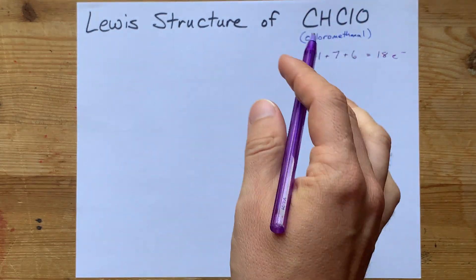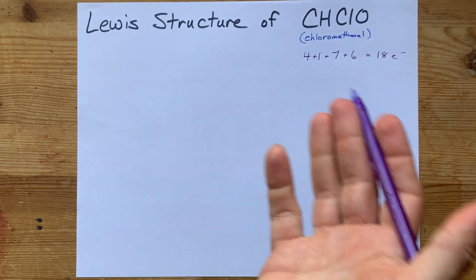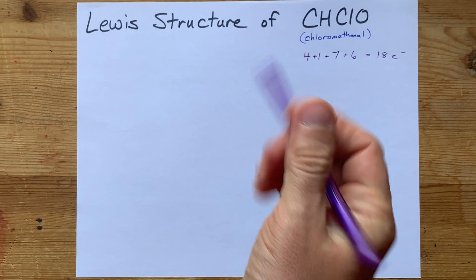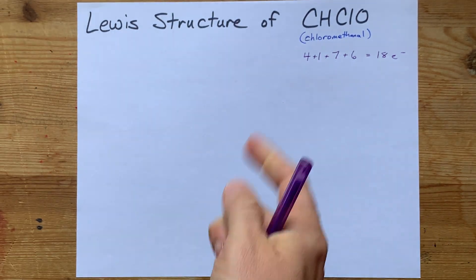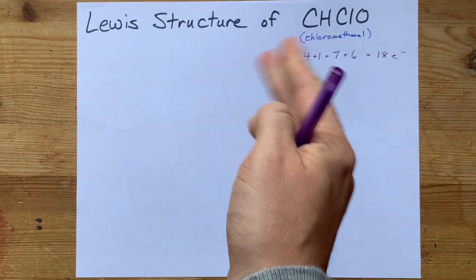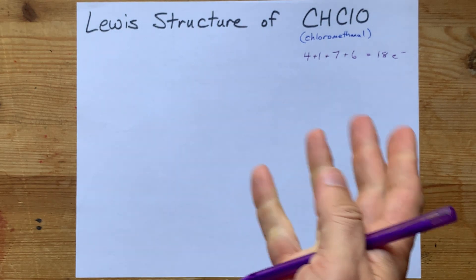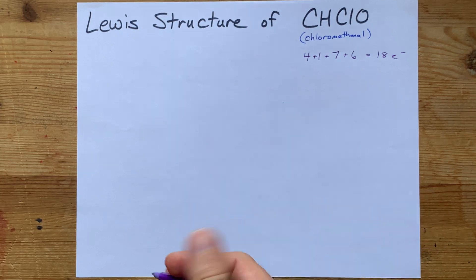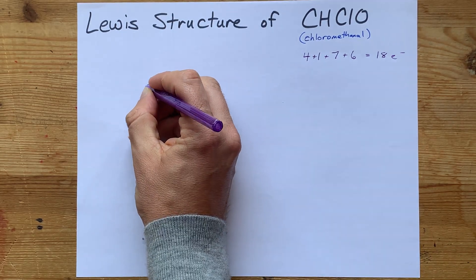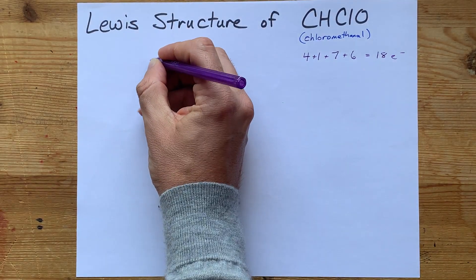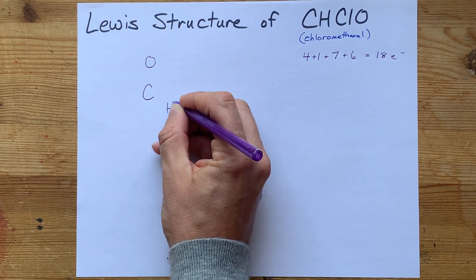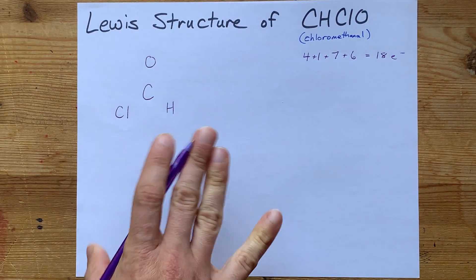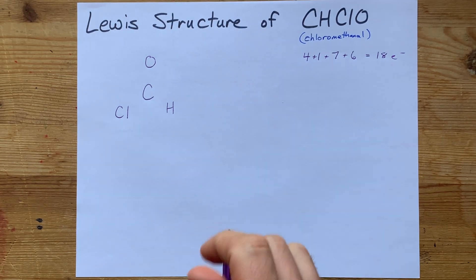Now of these four elements, carbon generally makes the most bonds. Carbon likes having four bonds to it. Oxygen likes 2, chlorine and hydrogen 1. We like putting the atom that can generally make the most bonds in the center of the structure. So I'm going to put carbon in the center, and I'm going to surround it with the other atoms. Now, I haven't actually put any electrons here yet, but it's coming.